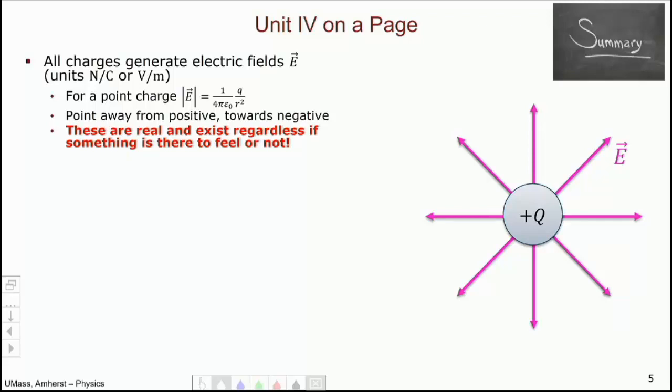So if I have the dumbest universe I can think of with nothing in it but a proton, there's actually two things in that universe. There's the proton itself and the electric field it makes. The proton itself and the electric field it makes are both there.